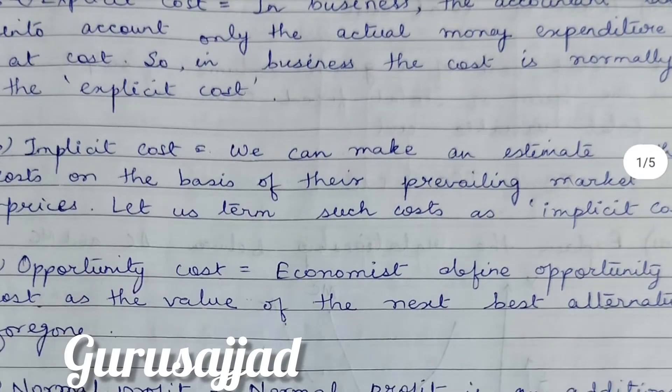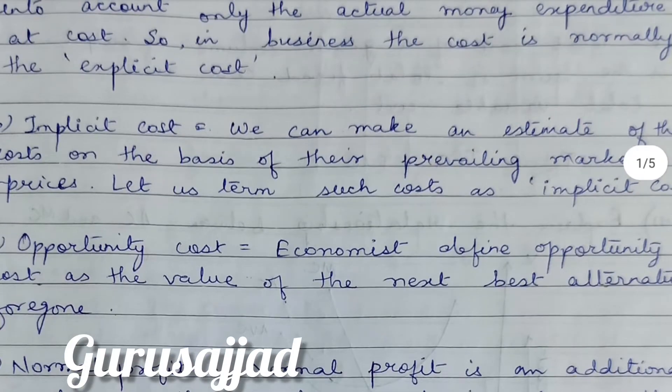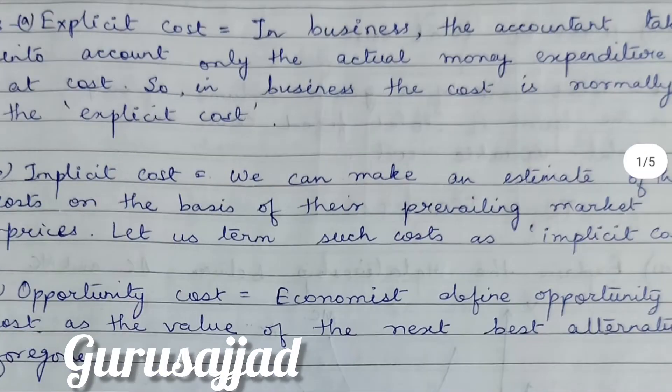Next is implicit cost. We can make an estimate of these costs on the basis of their prevailing market prices — we term such costs as implicit costs. Implicit cost is just the opposite of explicit cost. If you are asked to differentiate or distinguish explicit cost from implicit cost, you can present any definition in a tabular form.